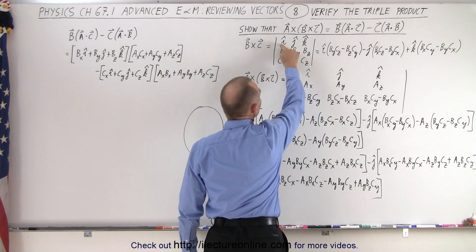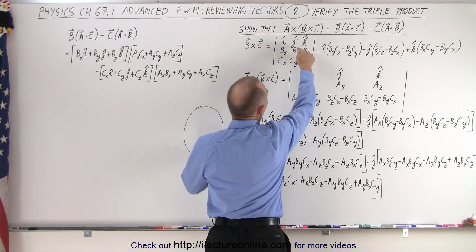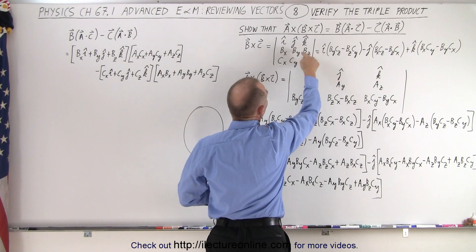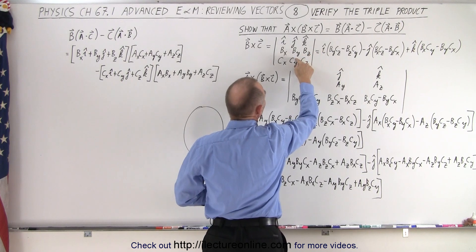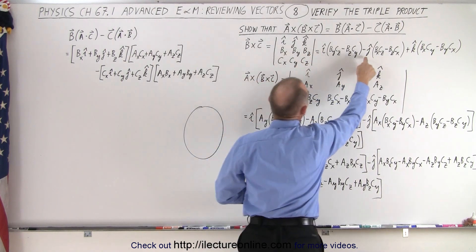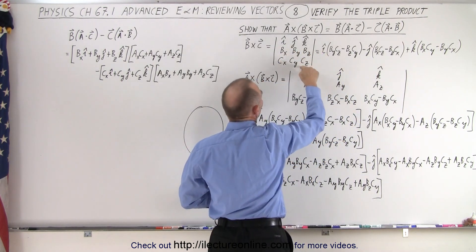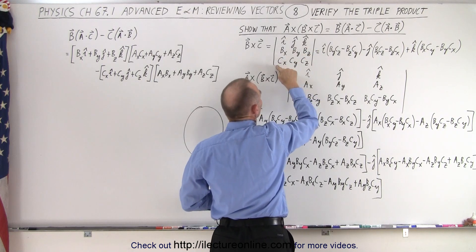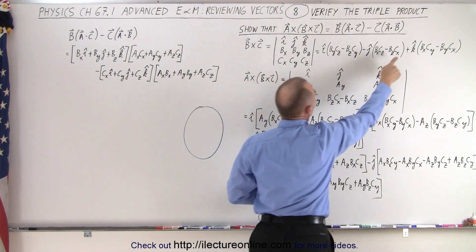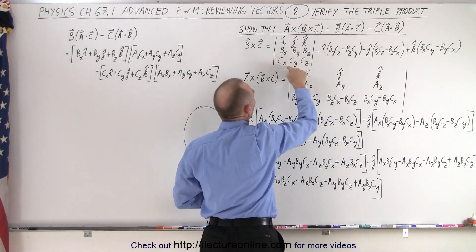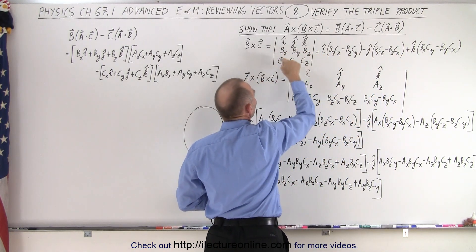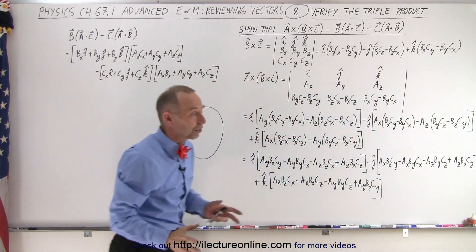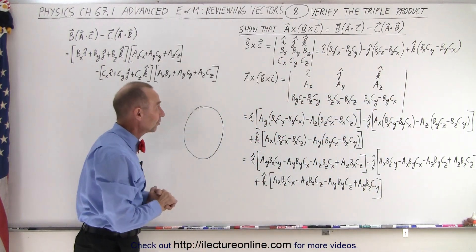Working out the determinant: I times (BY·CZ minus BZ·CY), minus J times (BX·CZ minus BZ·CX), plus K times (BX·CY minus BY·CX). That gives us the vector product of those two vectors.